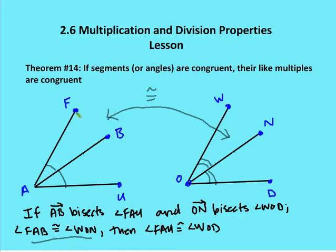which is a doubling of this particular angle, is going to be congruent to the doubling of angle WON, which would be angle WOD. Now this also holds for any multiple, so it doesn't have to be just two or doubling. It can be tripling or quadrupling or quintupling, and this holds for both segments and angles.